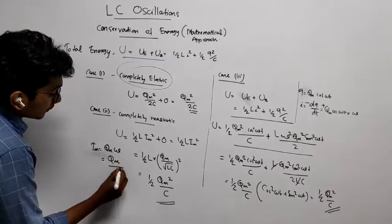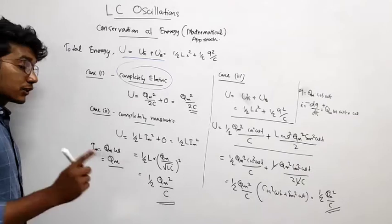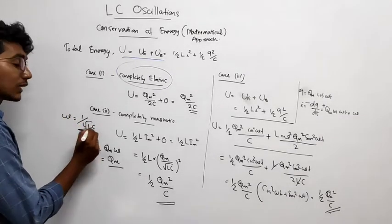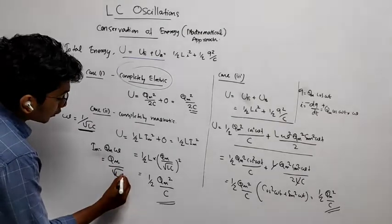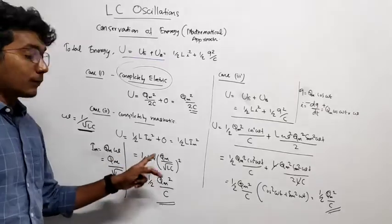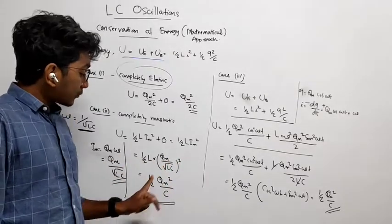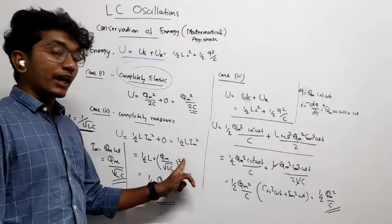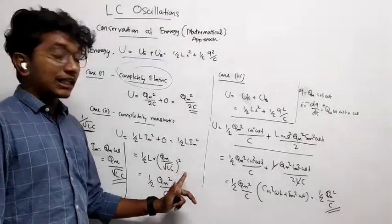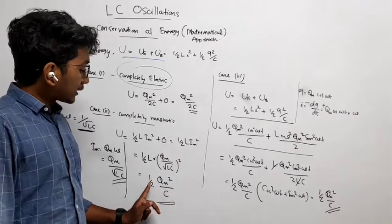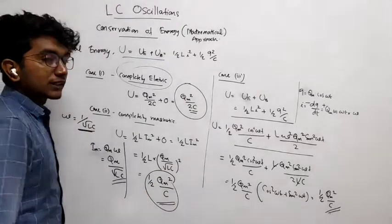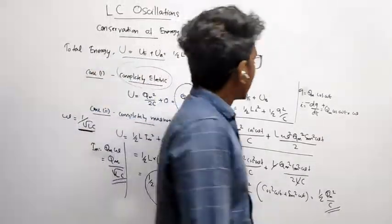So Qm divided by, how much is omega? Omega is equal to one by root LC. So you get root LC. So substitute this value here. Qm divided by root LC, the whole square will be half into L. L will get cancelled, the square will come. So in the denominator it will be LC. L will get cancelled. It is half into Qm squared by C. So this one and this one both are same.